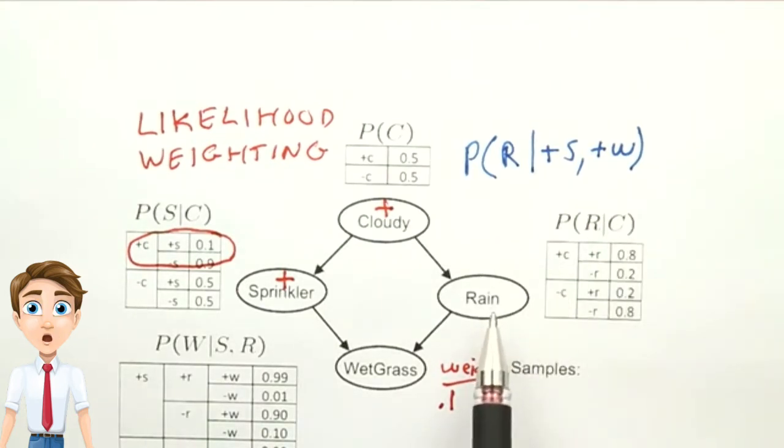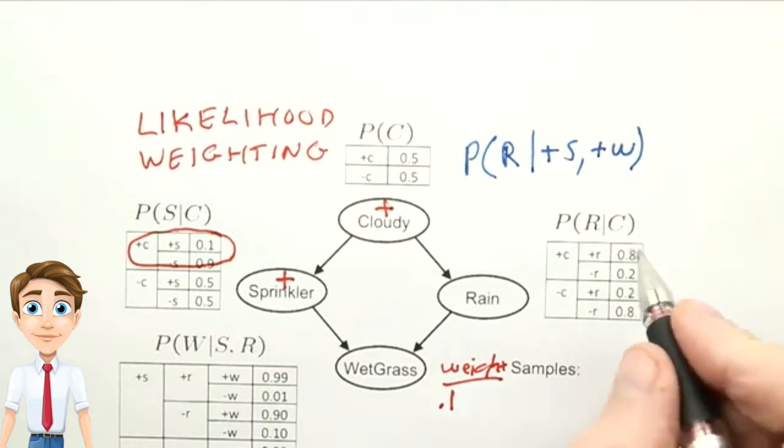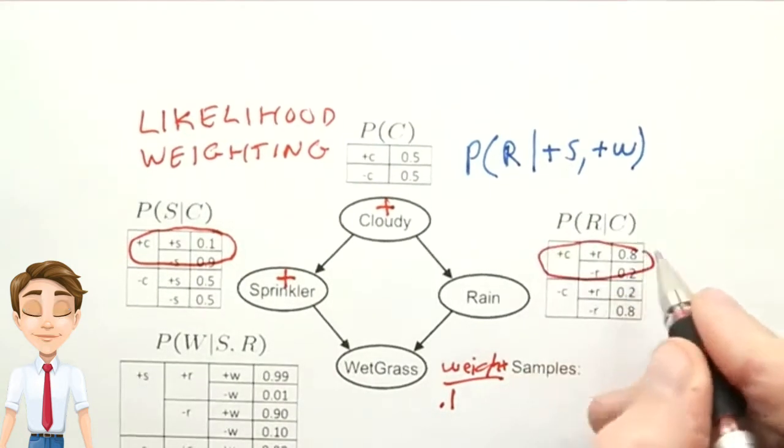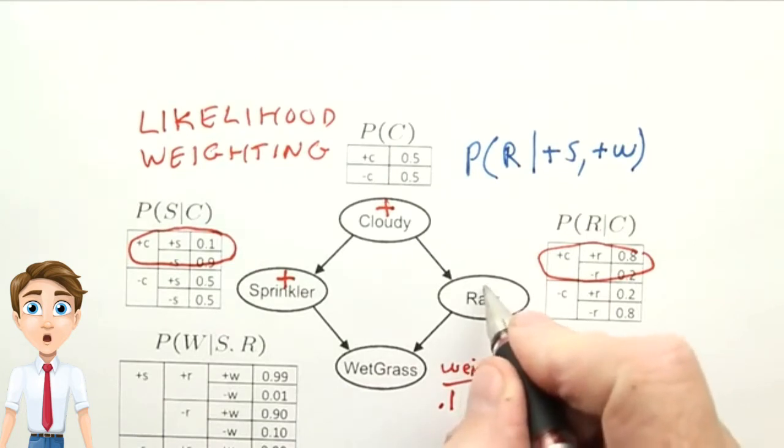Next, we'll look at the rain variable, and here we're not constrained in any way, so we make a choice according to the probability tables, with cloudy being positive. And let's say that we choose the more popular choice, and rain gets the positive value.